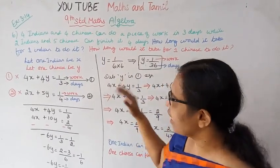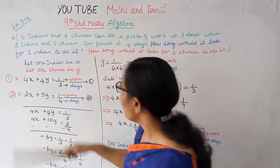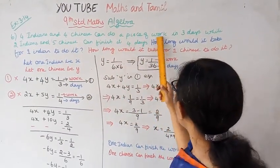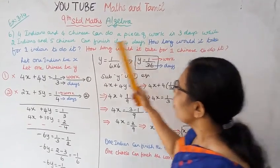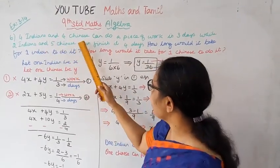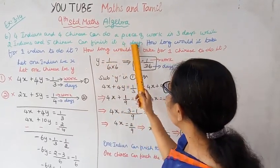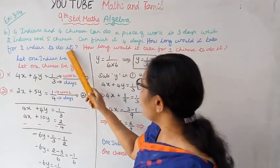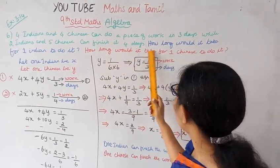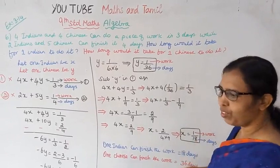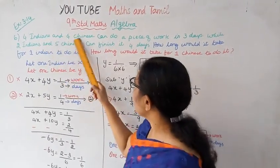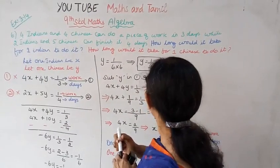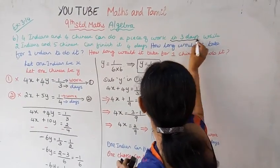In question 6, we will talk about: 4 Indians and 4 Chinese can do a piece of work in 3 days. While 2 Indians and 5 Chinese can finish it in 4 days.